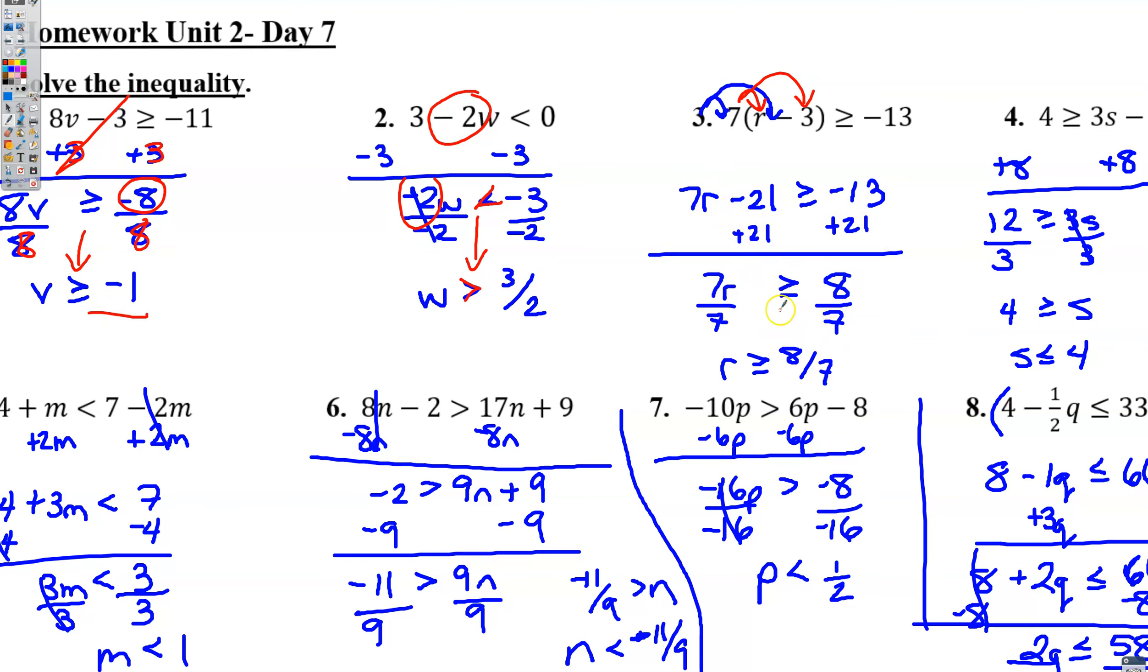Add 21 to both sides, then to get rid of the 7 you divide both sides by 7. Since we divided by 7 that was not a negative, you did not need to flip the sign. On number 4, the 8 looks like it was cut off, but we added 8 to both sides and then divided both sides by 3.